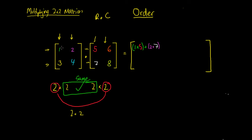We always start with rows first. Now we've multiplied this row by the first column, we're going to use this same row and multiply it by the next column. Our first number in the row is 1, and we multiply that by the first number in our second column, which is 6. Then we add to that the next number in the row, which is 2, multiplied by the next number in the column, which is 8. So it's 1 times 6 plus 2 times 8.